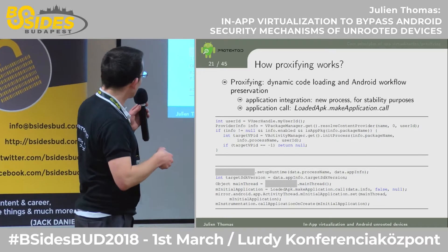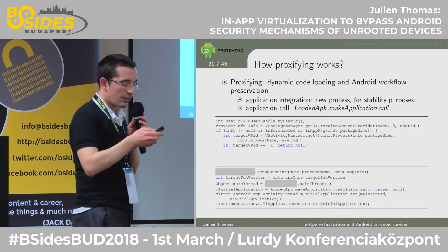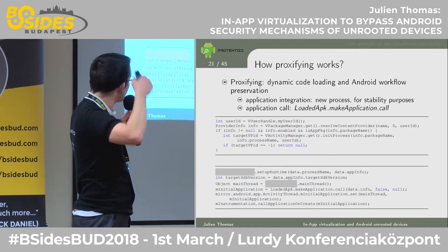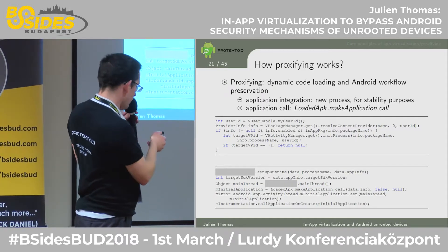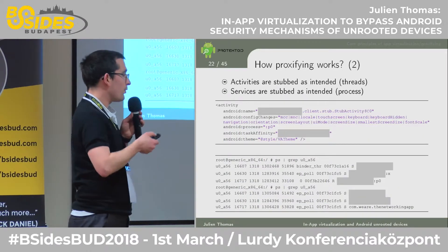How proxifying works: you need a new process through what we call a virtual activity manager. Normally you cannot launch a process on Android that is a new application — that's the goal of the Android system. So you virtualize the execution of a new process and virtualize the launch of the application. All of that happens under the control of the proxifier. In the manifest of the proxifier, you describe new activities with a very specific process attribute that says: when you launch this dynamically loaded activity, don't put it in my process — put it in a new process. This gives us the main activity of a new application launched in its own process, which is what we want.